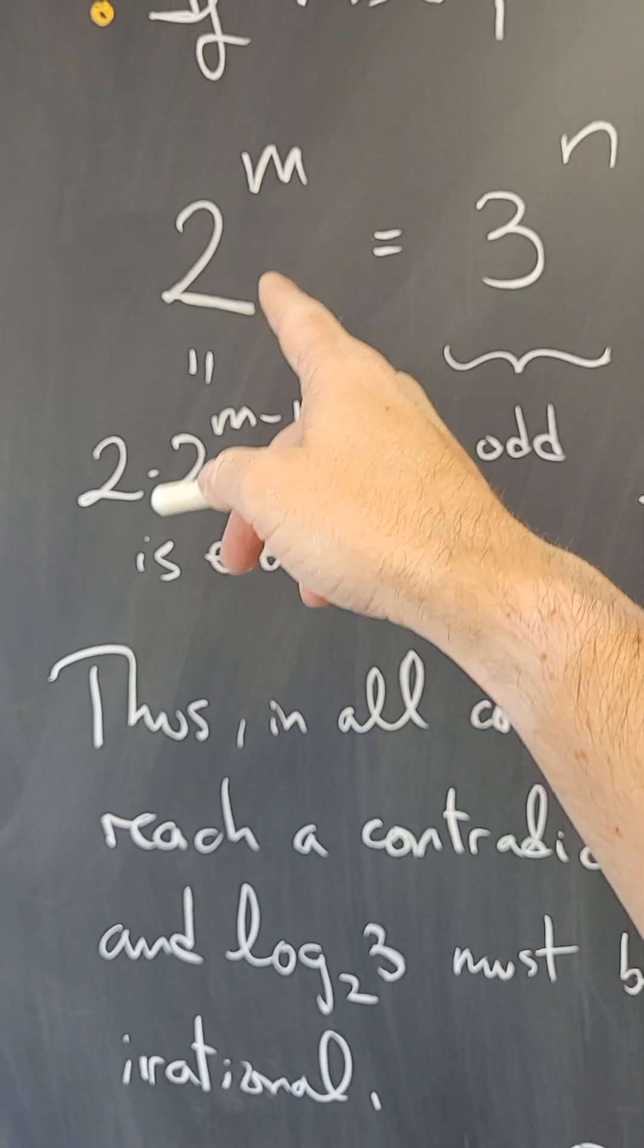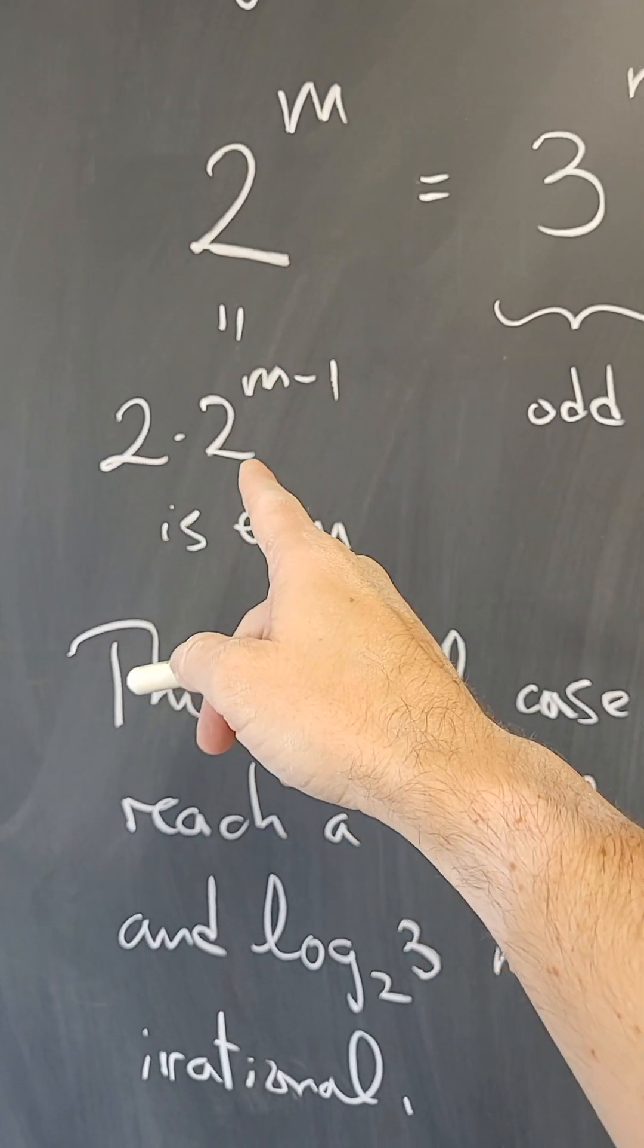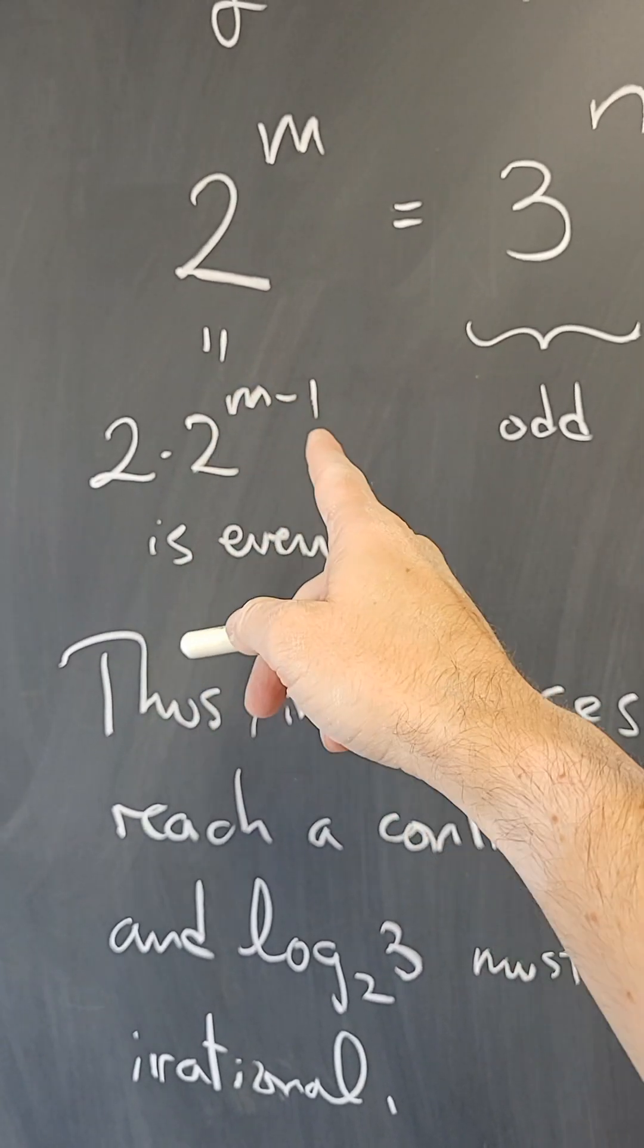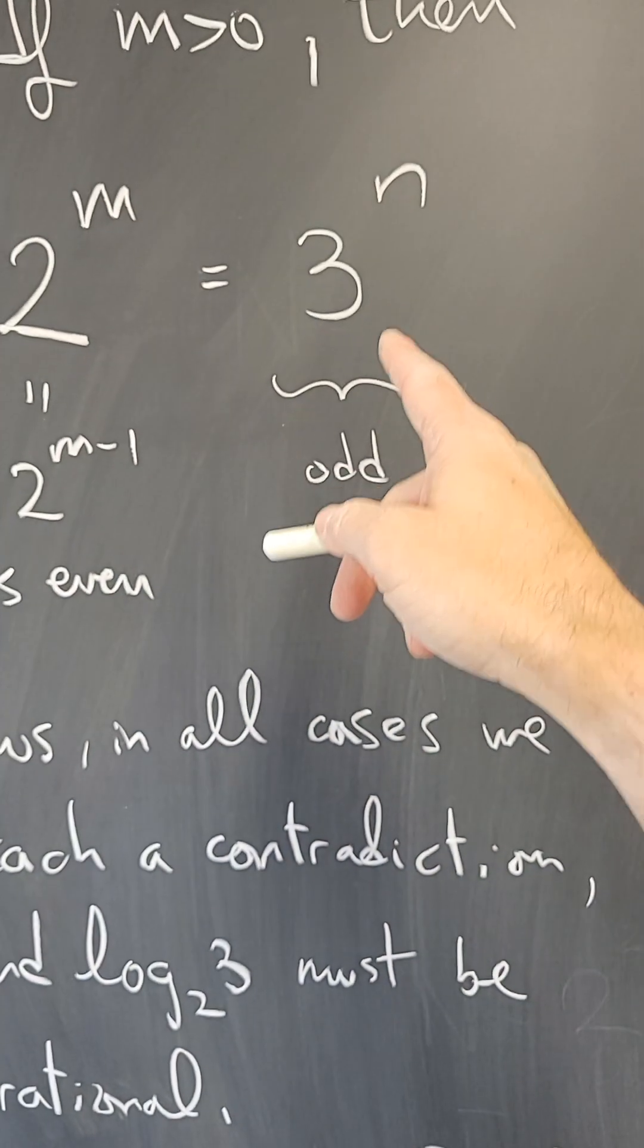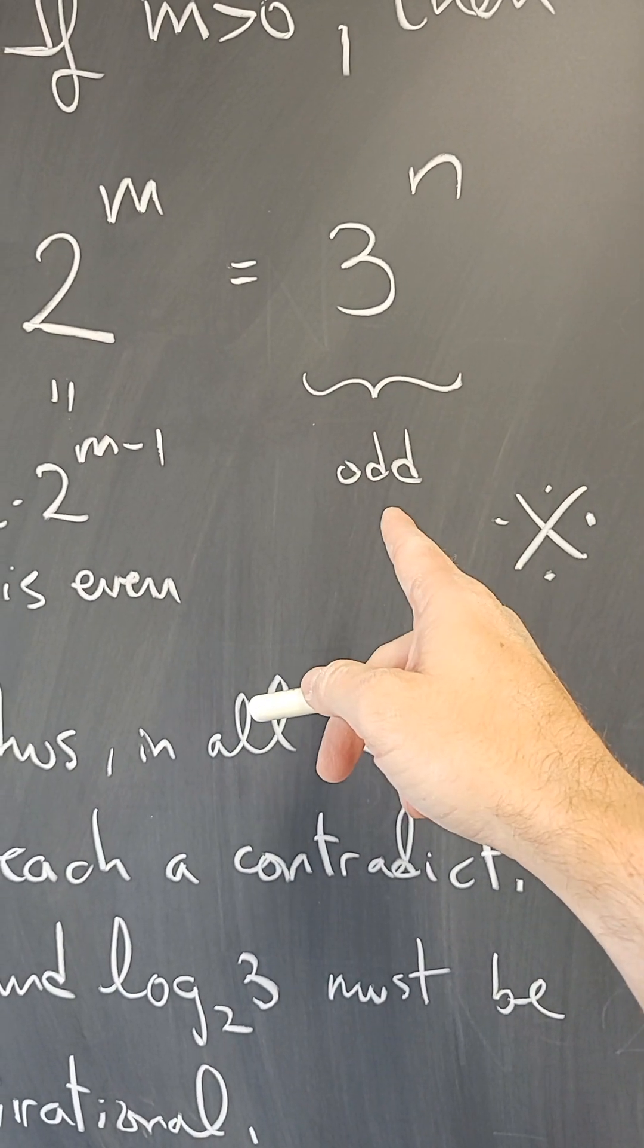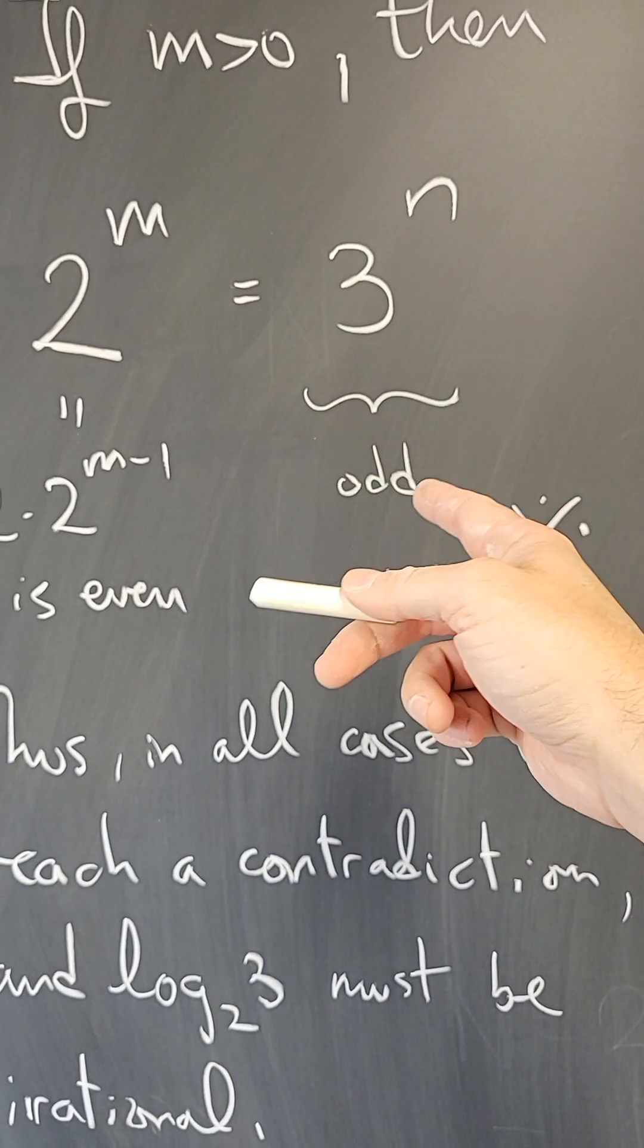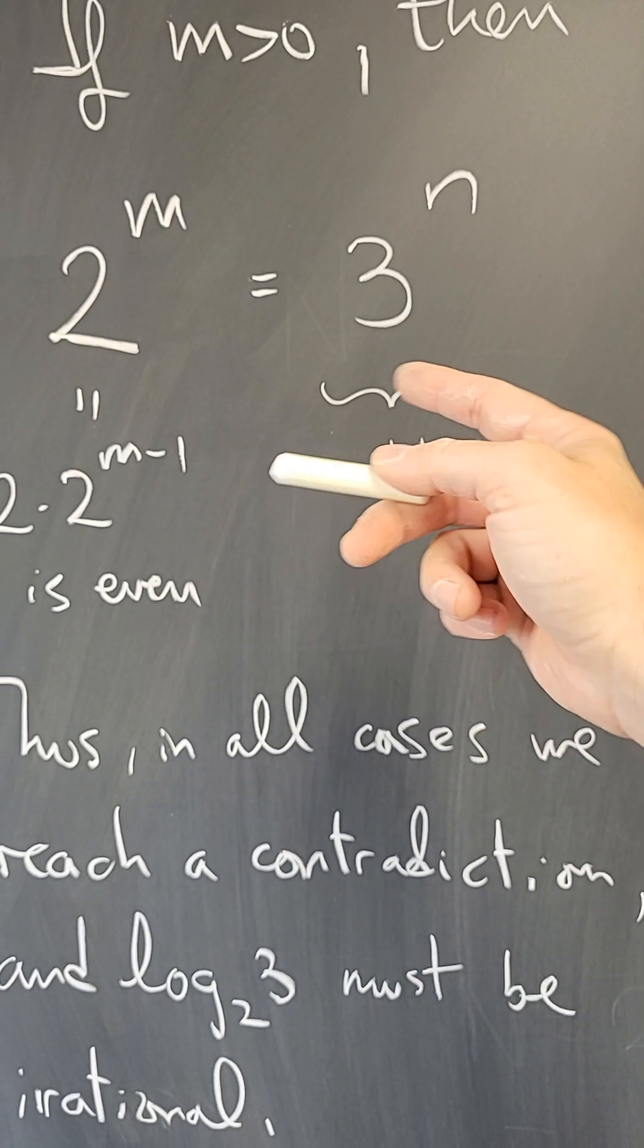2^m is even because it can be written as 2 · 2^(m-1), where m-1 is a non-negative integer. Meanwhile, 3^n is a power of an odd number, which can be shown, for example by induction, to be odd.